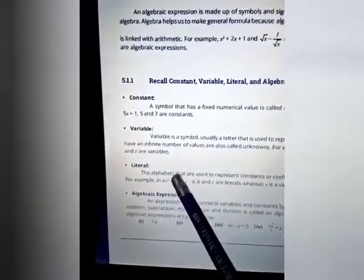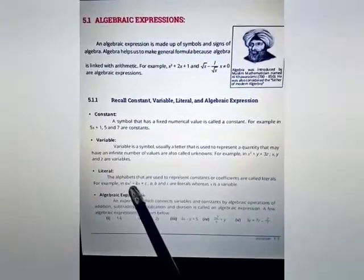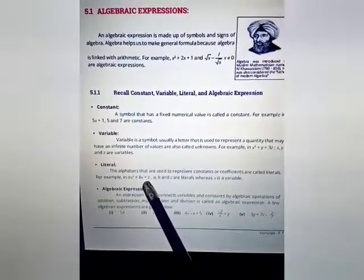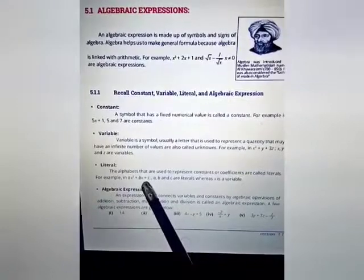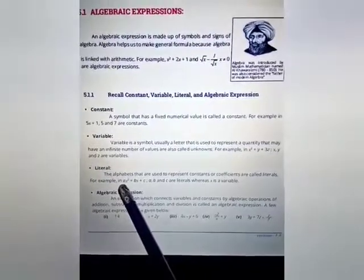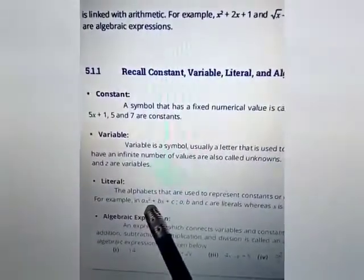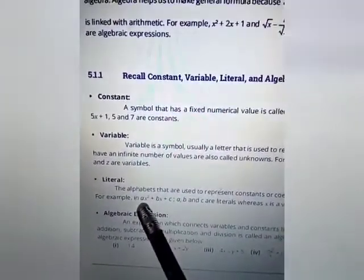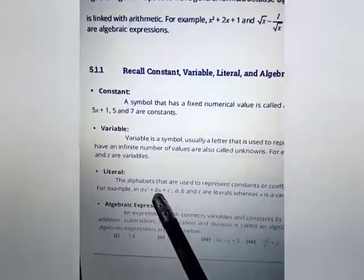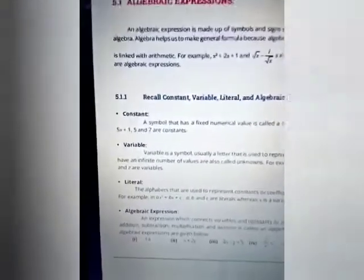Next is literal. The alphabets used to represent constants and coefficients are called literals. For example, in ax² + bx + c — when you show a coefficient or constant using an alphabet in an algebraic expression, that is called a literal. In this expression, a, b, and c are literals, where x is the variable. So now you understand constant, variable, and literal.